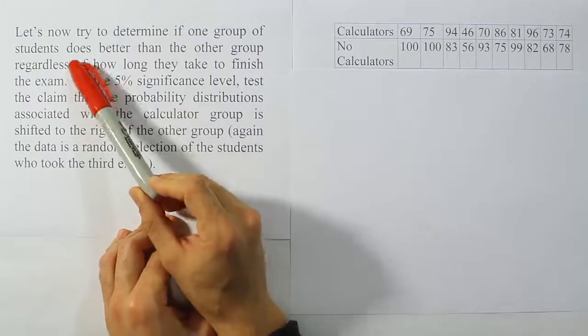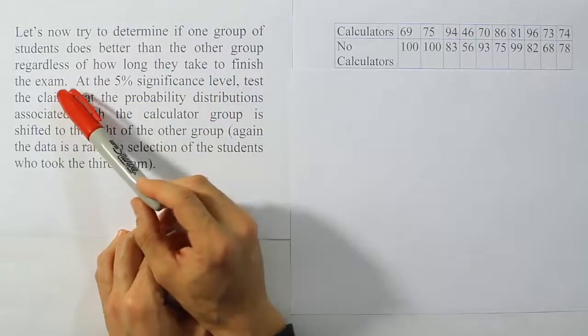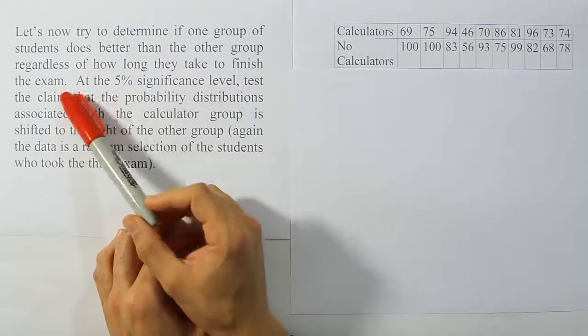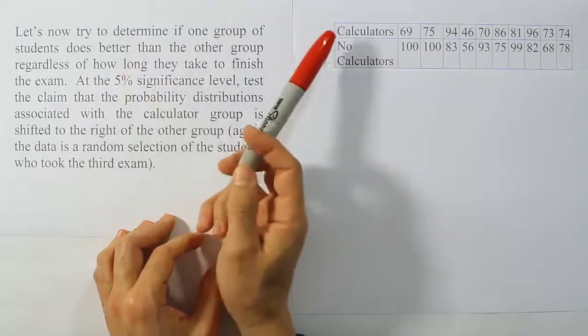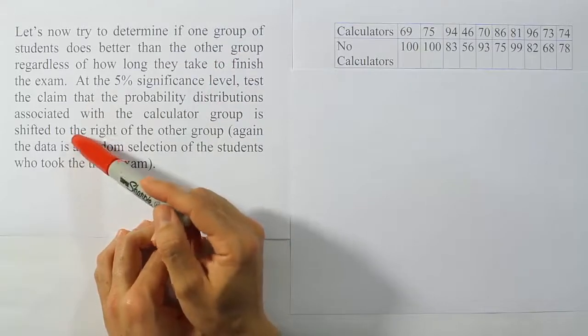Let's now try to determine if one group of students does better than the other group, regardless of how long they take to finish the exam. We're looking at the same data we did in the last video, the calculator group versus the no calculator group. Of course, this is talking about the TI-83 calculator, not that they have no calculator at all, but the second group uses a lesser calculator, one that doesn't have as many programmable features.